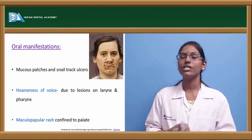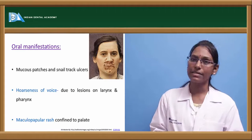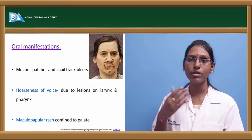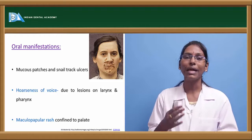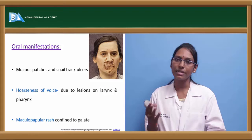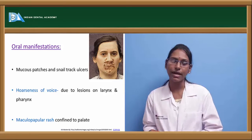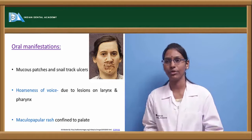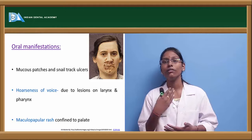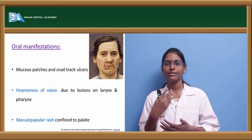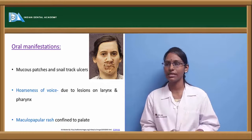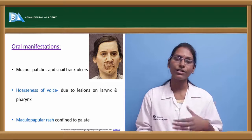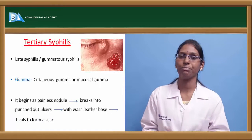Oral manifestations in secondary syphilis include mucous patches and snail tract ulcers in the oral cavity. The primary sites of these snail tract ulcers are the palate or buccal mucosa. Lesions also involve the pharynx and larynx, leading to hoarseness of voice. The maculopapular rash is usually confined to the palate.